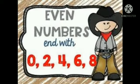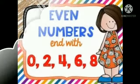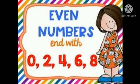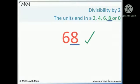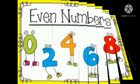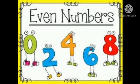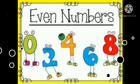Even numbers — remember those from lower school? Yes, numbers when divided by 2 have a remainder of 0. A number then is divisible by 2 if the digit at the unit place is either 0 or a multiple of 2. And we know that multiples of 2 are 2, 4, 6, 8, and the list continues.